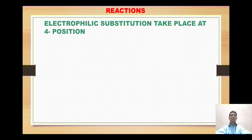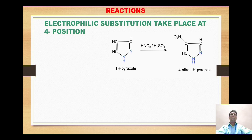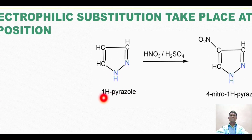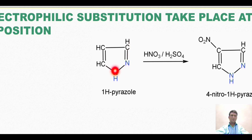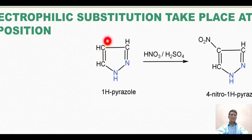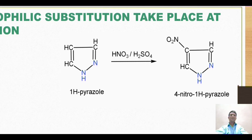Moving on to reactions — the first is electrophilic substitution, which takes place at position number four. The two nitrogens in pyrazole are electron-withdrawing in nature: one nitrogen withdraws electrons from C3 and the other from C5, so electron density is lower at positions three and five. This means electron density is relatively higher at position four, so any electrophile attacks at position four to give the substitution product.